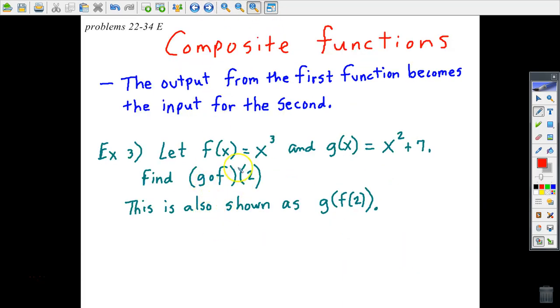Now let's take a look at composite functions, and this will conclude this lesson. This should help you on 22 to 34 even. I'm going to let you look at this blue statement, and then we'll come back to it after you've actually seen how to find the composite of two functions and see if it makes more sense after you've actually seen this in action. The output from the first function becomes the input for the second. What in the world does that mean?